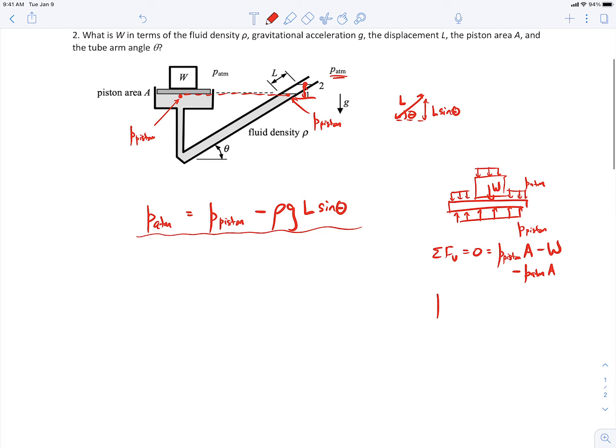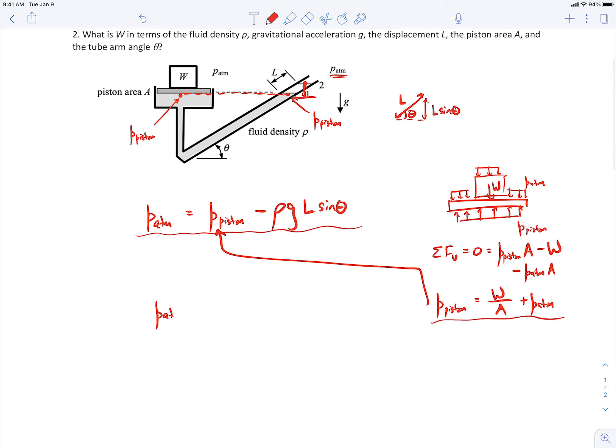So then when I work this out, I'll get P piston is equal to W over A plus P atmosphere, if I've done my algebra correctly. So I can substitute that in right up here, and then let me do that and simplify it.